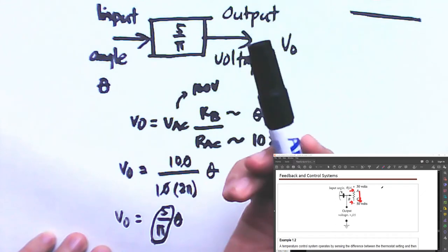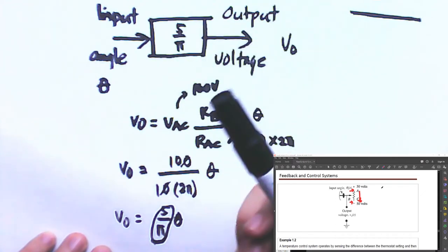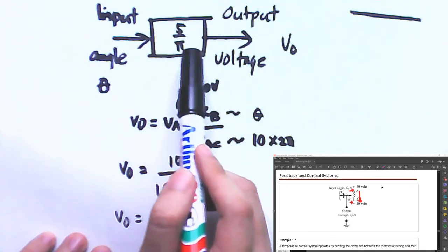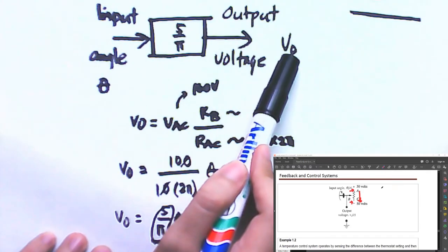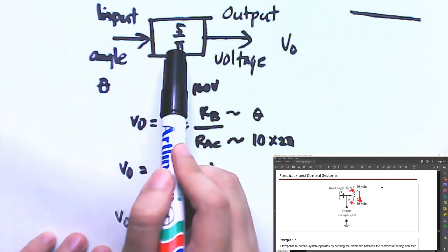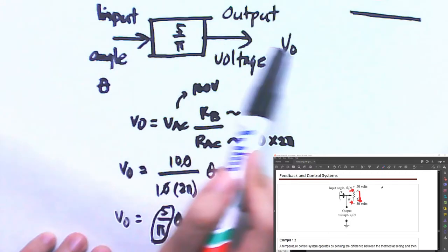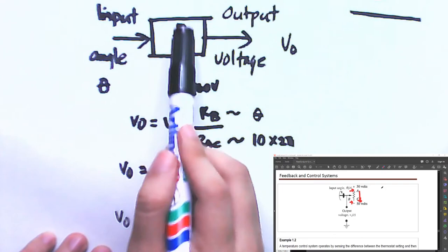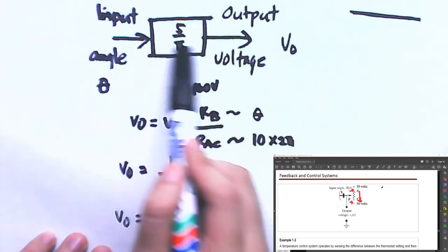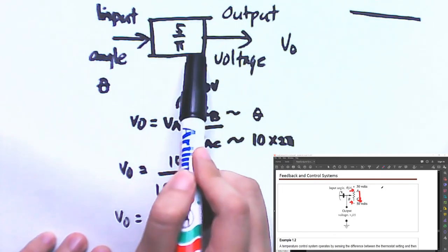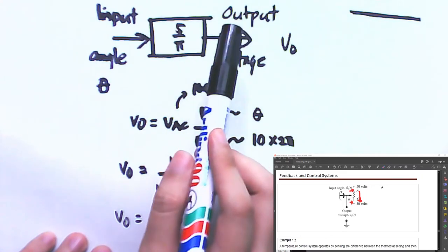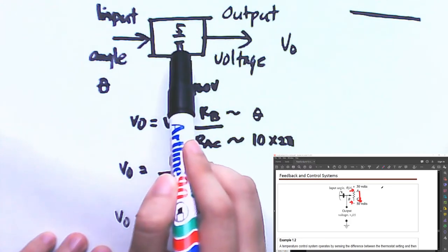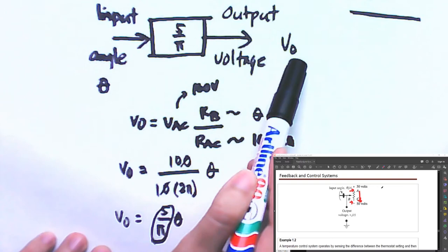If the model is expressed in terms of a differential equation rather than a transfer function, we cannot simply do the operation gain times input equals output. That operation is only valid when the gain is a constant or when it is in transfer function form.